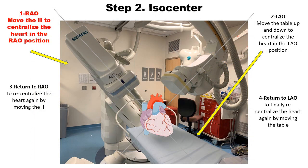Step number two is the most important step, which is adjusting the isocenter. What this means is that we want to place the heart in the intersection of the two radiation beams.